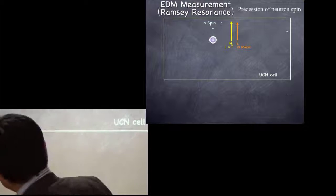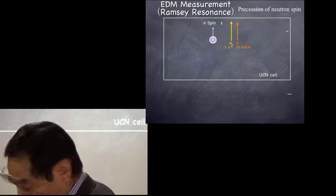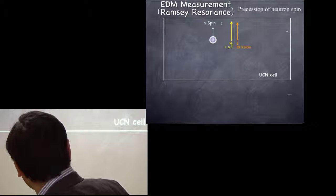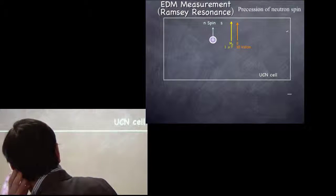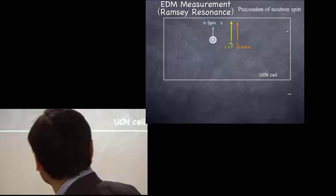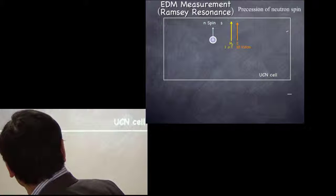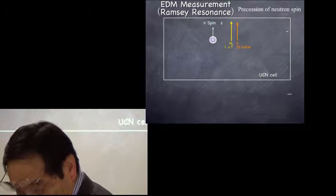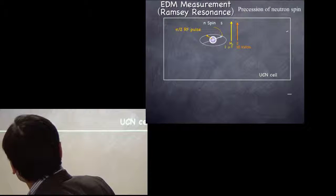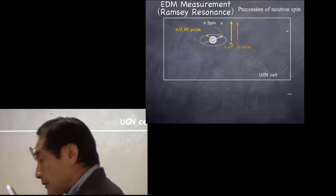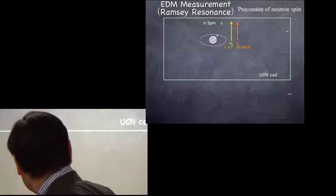So the EDM measurement, we use Ramsey resonance technique. We will confine neutrons, polarized neutrons in a cell under the magnetic field and the strong electric field. And by applying half-pi pulse, the neutron spin will be rotated 90 degrees.